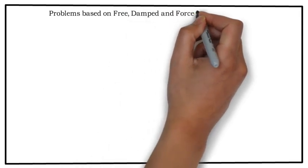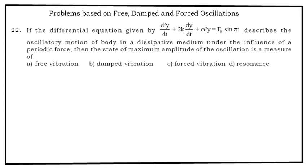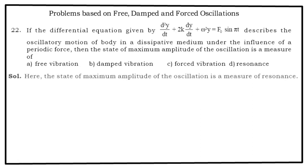Problems based on free, damped and forced oscillations. Problem number 22. If the differential equation given by d²y/dt² + 2K·dy/dt + ω²y = F₀ sin(πt) describes the oscillatory motion of body in a dissipative medium under the influence of a periodic force, then the state of maximum amplitude of the oscillation is measured off - options are there in front of you. Here the state of maximum amplitude of oscillation is a measure of resonance. So the answer is D.